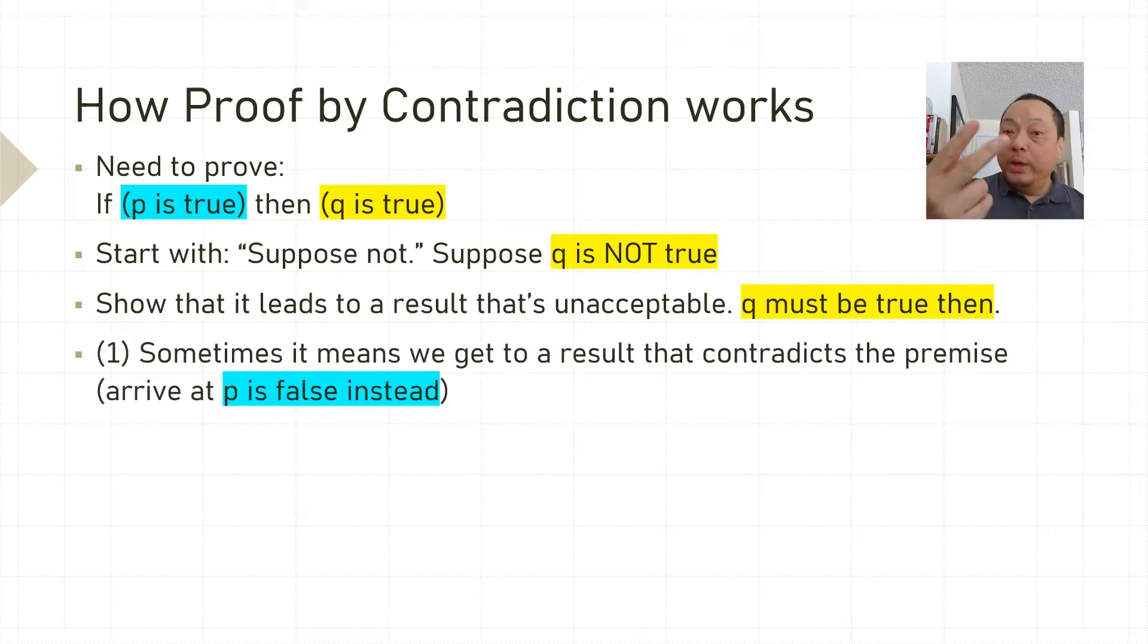There are two ways for things to be unacceptable. Number one is that we get to something that contradicts the premise that P is true. We somehow arrive at a result that says P is false instead. Then we get our contradiction. That's where the name proof by contradiction comes from.